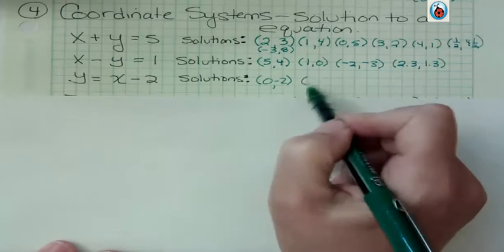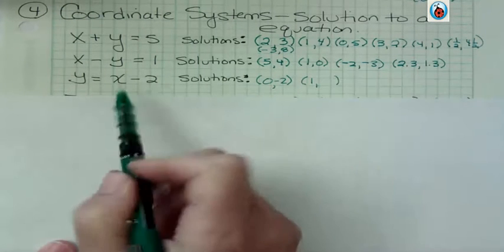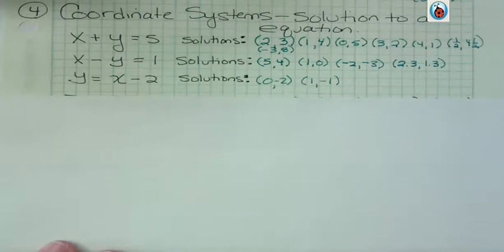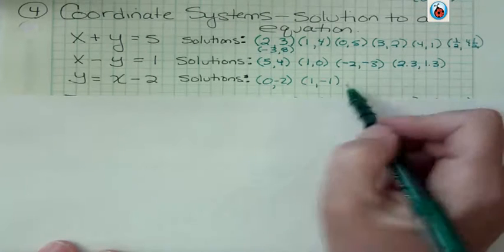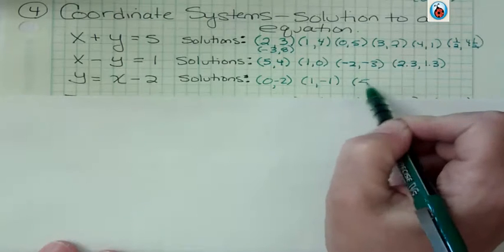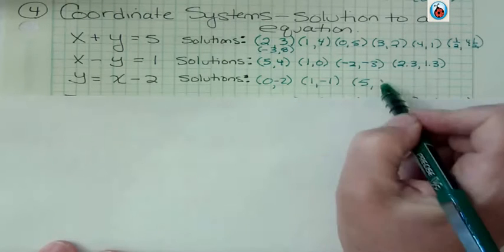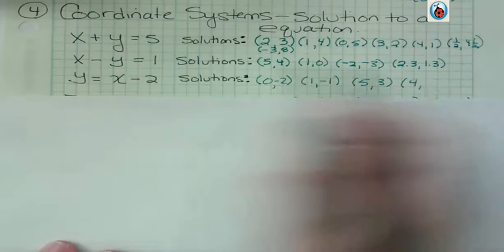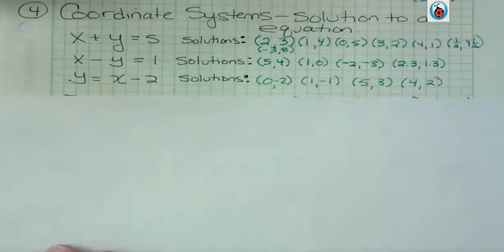If x was 1, 1 minus 2, y would be negative 1, right? All we have to do is pick an x and plug it in and we could see it. What if we said x was 5, 5 minus 2, y would be 3. Or if x was 4, 4 minus 2, y would be 2. We can pick solutions for equations all day long.